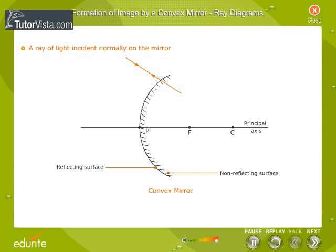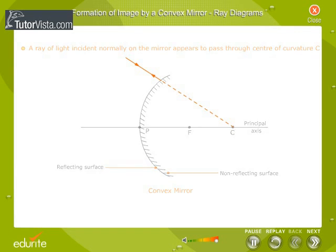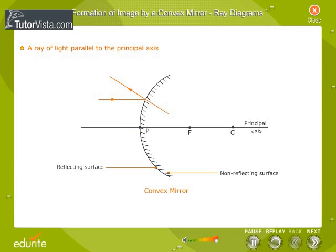A ray of light incident normally on the mirror appears to pass through the center of curvature C. A ray of light parallel to the principal axis appears to diverge from the focus F.